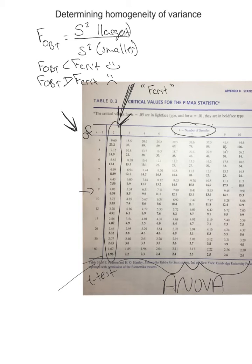For example, if we have two groups of ten and an alpha level of .05, the critical value of F — F-crit — is 4.03. If instead we had two groups with only six people each and an alpha level of .01, we'd go to df = 5 (six minus one), and the F-crit would be 14.9.